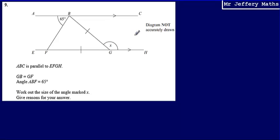This is question 9 from a series of videos taking a look at the Edexcel practice papers. Here we're given a diagram. We're told that ABC is parallel to EFGH. We're told that GB is equal to GF, so that length between G and F equals the length between G and B. We're told that angle ABF is equal to 65, and we're asked to work out the size of the angle marked X.